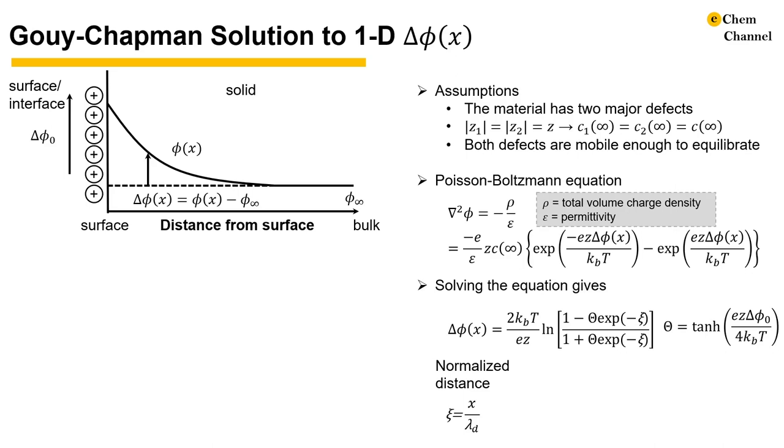The assumption allows us to substitute for the total volume charge density and get this equation. Solving this equation gives the analytical solution to the 1D potential profile. It's a messy equation, but in essence, we have this capital theta term that is not a function of distance. The Ksi term is the normalized distance with respect to what is commonly known as the Debye length. This is the Debye length in the Gouy-Chapman model.